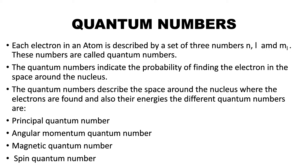Now coming to quantum numbers — what are quantum numbers? Each electron in an atom is described by a set of three numbers N, L, and ML. These are called quantum numbers. They indicate the probability of finding the electron in the space around the nucleus, and also describe the space and energies of the electrons.